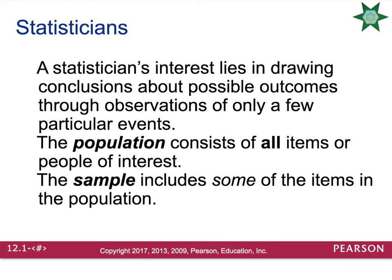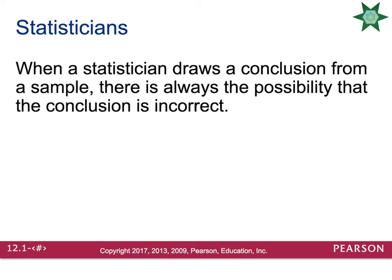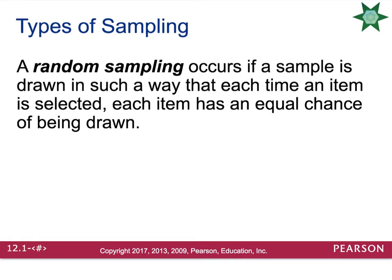A statistician's interest lies in drawing conclusions about possible outcomes through observations of only a few particular events. The population consists of all of the items or people of interest, and the sample is just some of those items. Typically, statisticians work with the sample. When a statistician draws a conclusion from a sample, there is always the possibility that the conclusion is incorrect. A random sampling occurs if a sample is drawn in such a way that each time an item is selected, each item has an equal chance of being drawn.